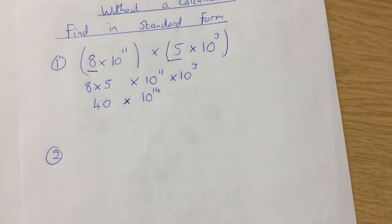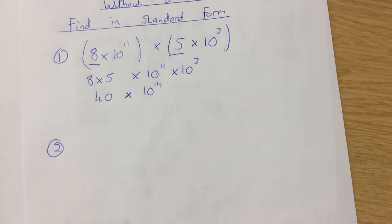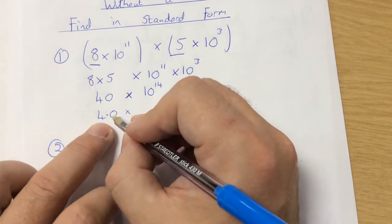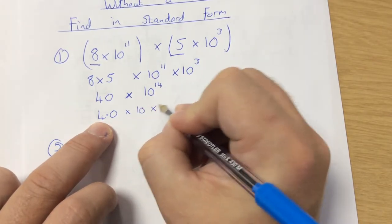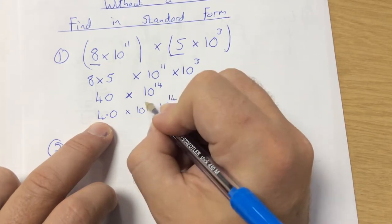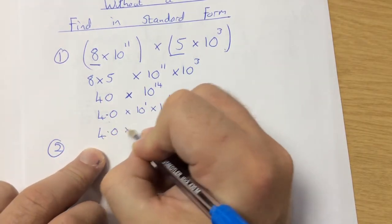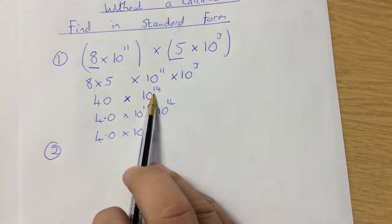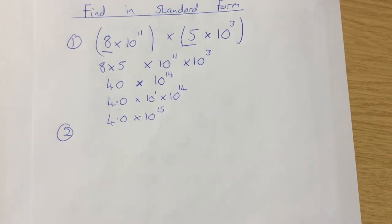That's easy, but there's one extra step. Our numbers have got to be between 1 and 9.9. Because I want 4.0 and not 40, I need to add another power. My answer is 4, and 4 times 10 is 40, so I've actually got 4 times 10 to the 1. I need to add that power on, so it becomes 4 times 10 to the 15. When your coefficient is too big like that, you add the power on at the end to put it between 1 and 9.9.